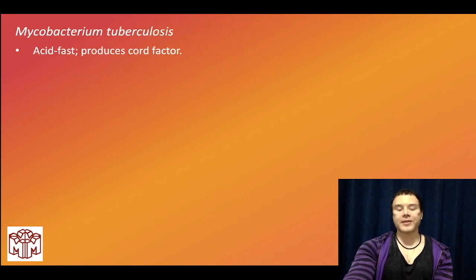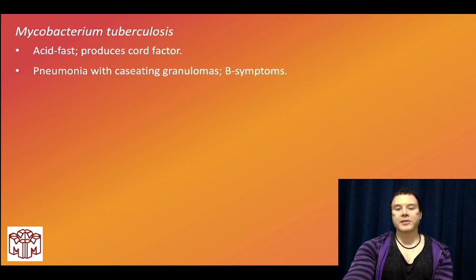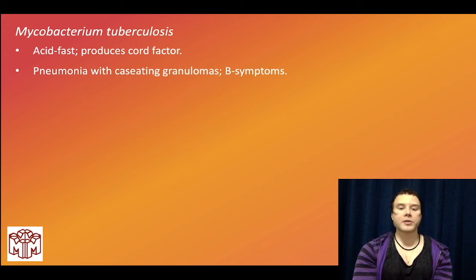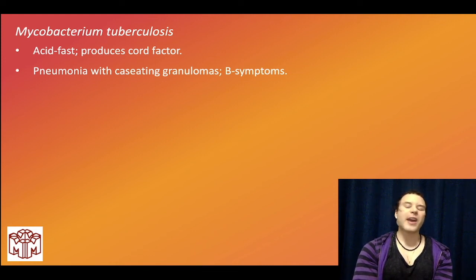Mycobacterium tuberculosis: lengthy discussion. It is difficult to stain on Gram stain, so we require a special stain — acid fast. It produces cord factor as a virulence factor, which is on the new NBME exams for Step 1. It causes caseating granulomas. Most conditions causing granulomas — autoimmune diseases like sarcoidosis or Crohn's, berylliosis, or Bartonella henselae for cat scratch disease — are non-caseating. Caseating refers to TB and also systemic fungi.